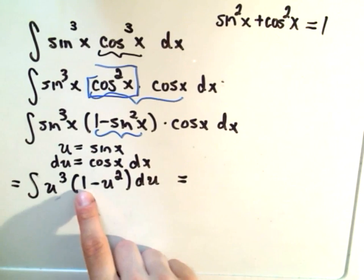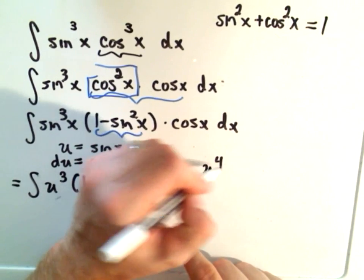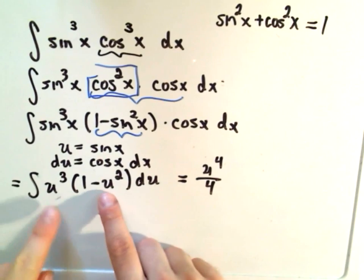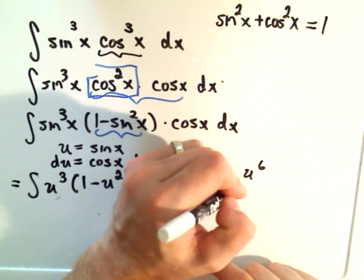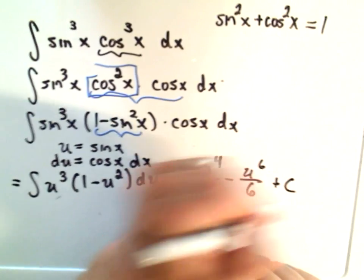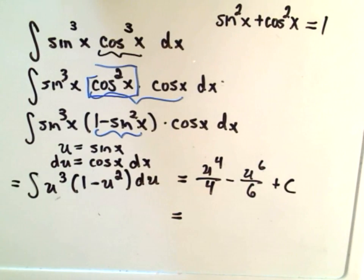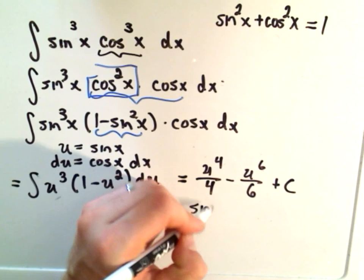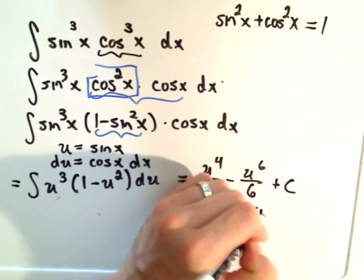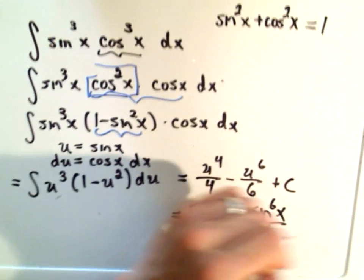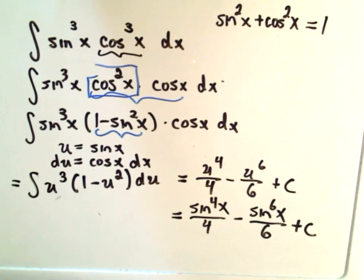If you distribute, you'll get u cubed. If you integrate, you'll get u to the fourth over four. I'll get a negative u to the fifth, if I integrate I'll get u to the sixth over six plus c. Just simply plug your u-substitution back inside of there. You'll get sine to the fourth of x over four minus sine to the sixth of x over six plus c is your answer.